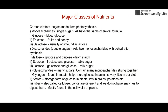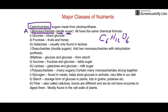Now let's run through the major classes of nutrients, focusing on carbohydrates, which are made by photosynthesis in plants. There are three big sizes: first are monosaccharides — single sugars — all sharing the formula C₆H₁₂O₆. The most famous is glucose, but fructose and galactose are also monosaccharides. Once absorbed, everything gets converted into glucose so it can be used to make ATP.